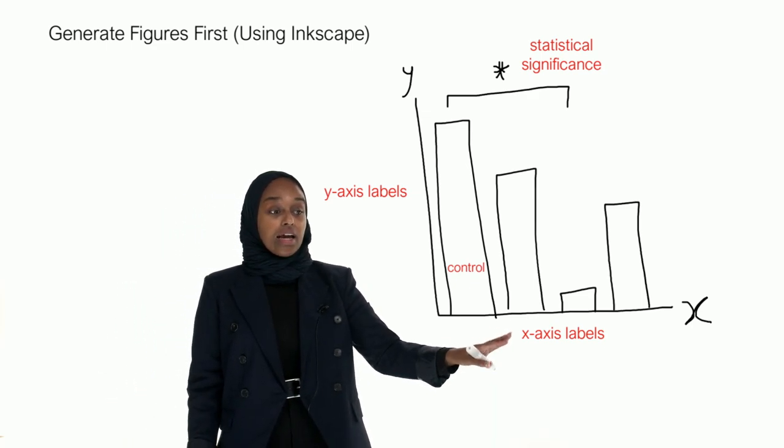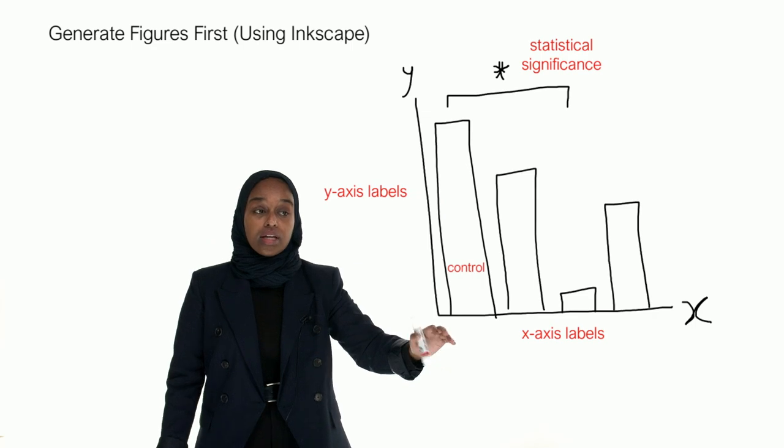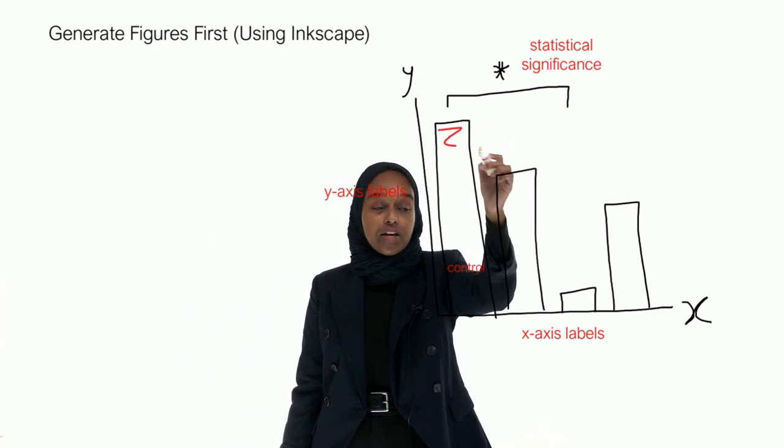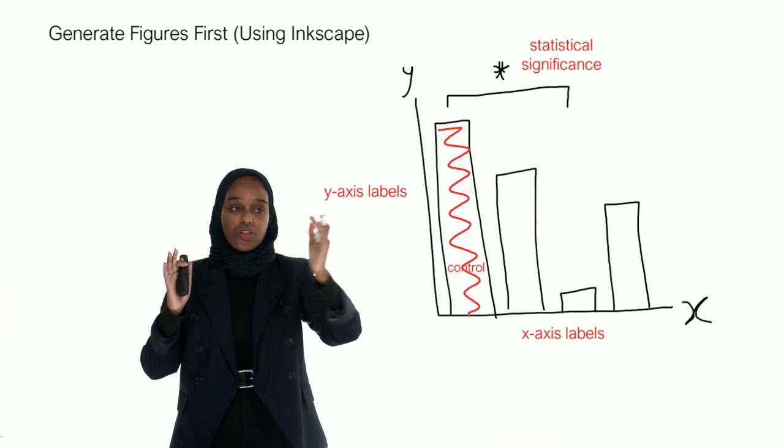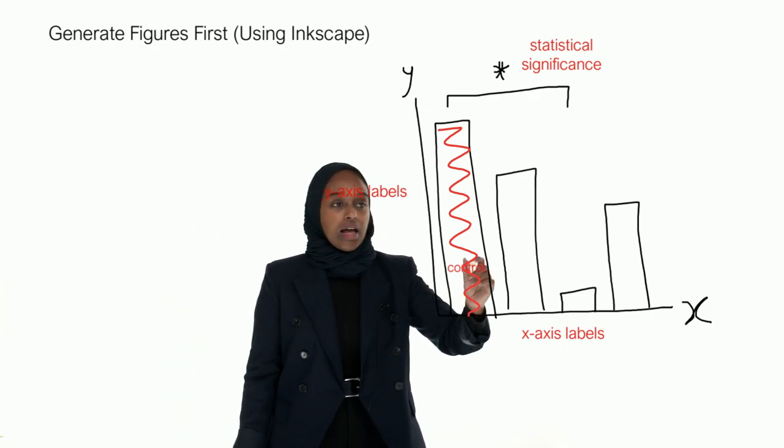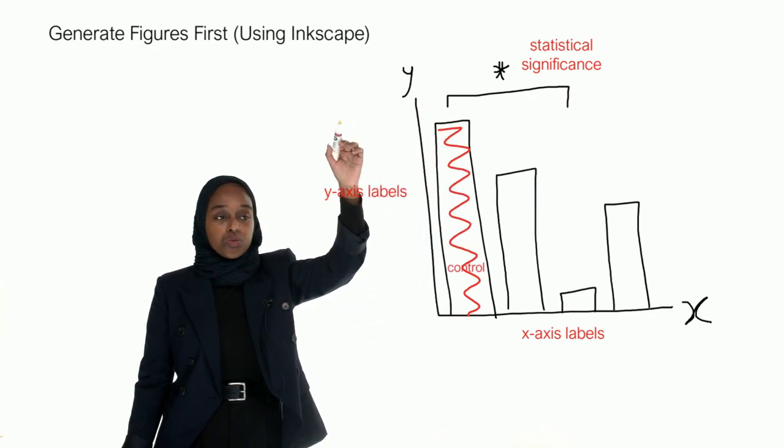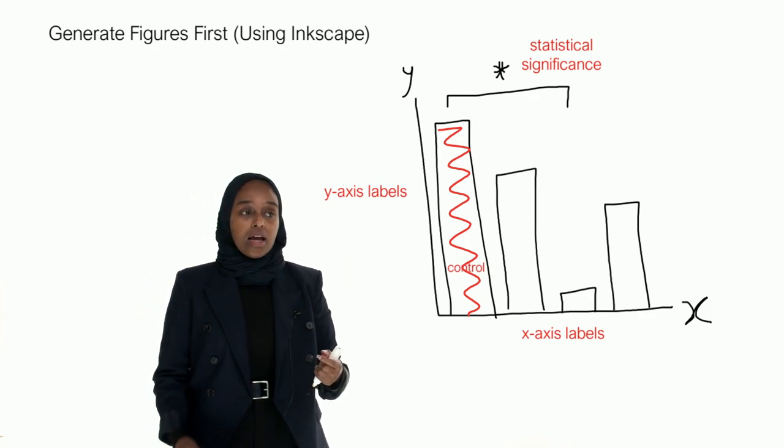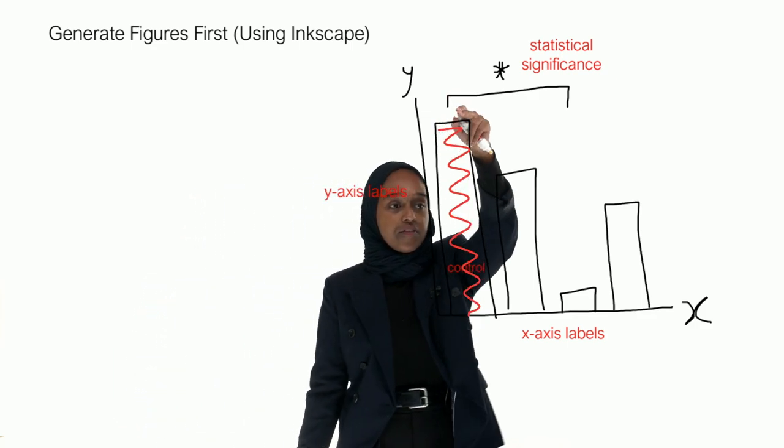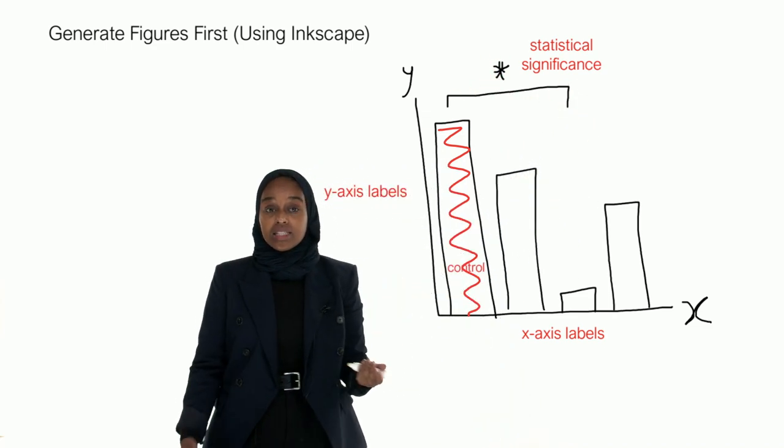So you need to make sure that you've got your x-axis labelled, your y-axis. Always have the control in the first bar. This first bar should always be your control because that is what you are comparing the other things to. And then this line that you can see here is what you use to show that you're comparing it statistically. So in this case we're comparing the first one with the third one and this asterisk means that it is significant.